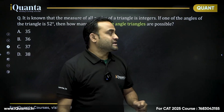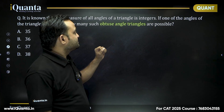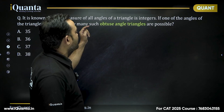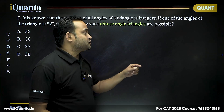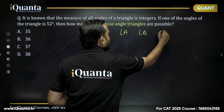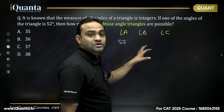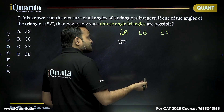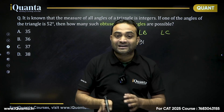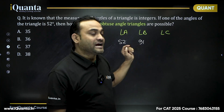Now a similar question: it is known that the measure of all angles of a triangle are integers. If one of the angles is 52 degrees, then how many such obtuse angle triangles are possible? Again, we have three angles — angle A, angle B, and angle C. One angle is fixed at 52 degrees, so the sum of the remaining two angles must be 128 degrees. For an obtuse triangle, one angle must be greater than 90 degrees, so the minimum obtuse angle is 91 degrees.